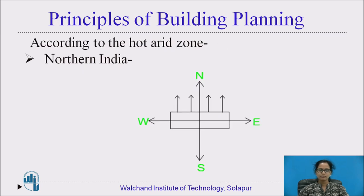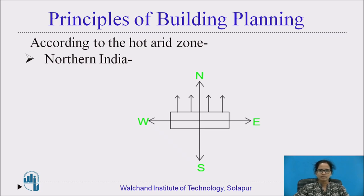We will see how the orientation of the building is affected according to the hot arid zone, that is in northern India, like Punjab. Here you can see the directions: north, south, east, and west. When the orientation of the building is along the east-west direction, the facing should be towards the north direction, so that it minimizes the solar heat gain during that season. We will also see what the percentage of solar heat gain is.